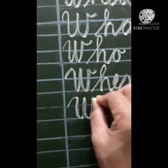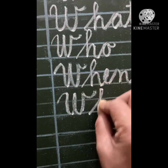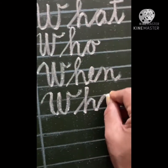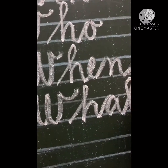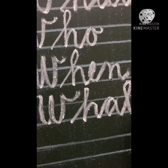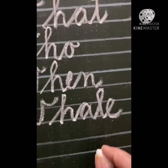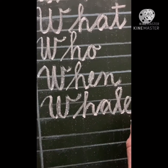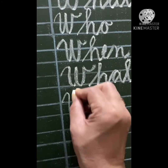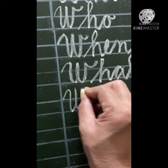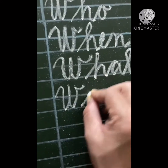The next word starting with WH: W-H-A-L-E — whale. Whale is the biggest animal on Earth. Next one is also starting with the WH sound.